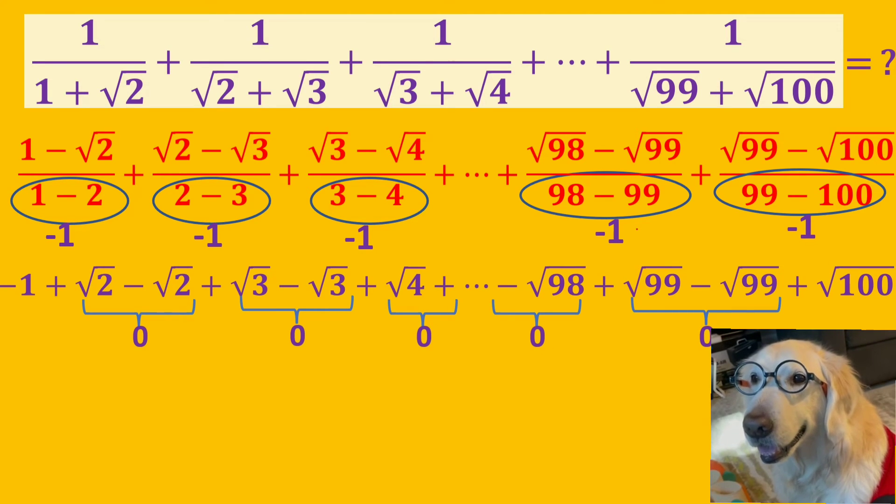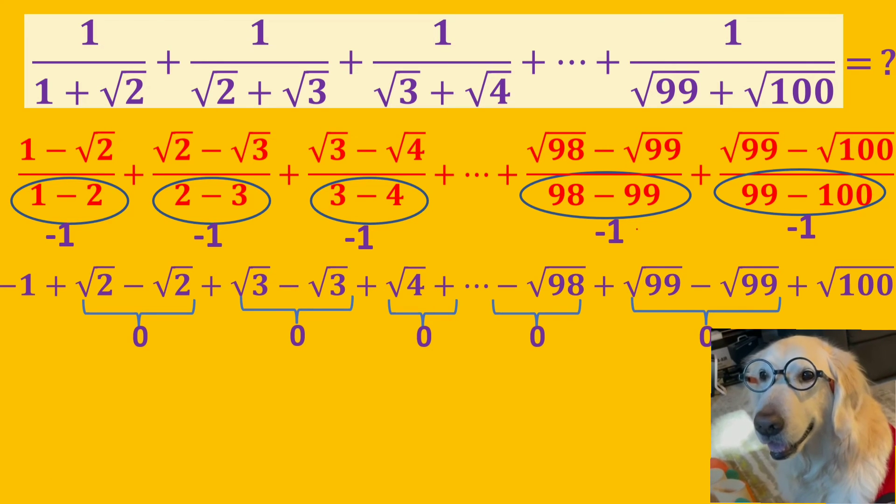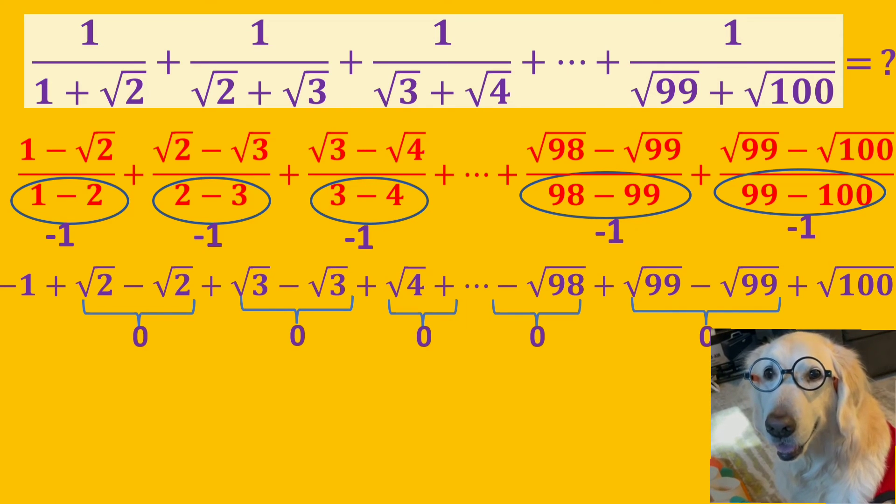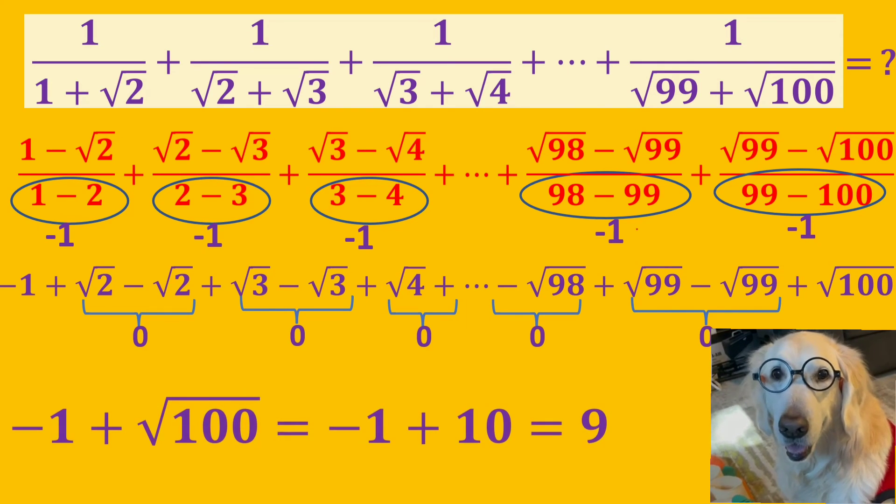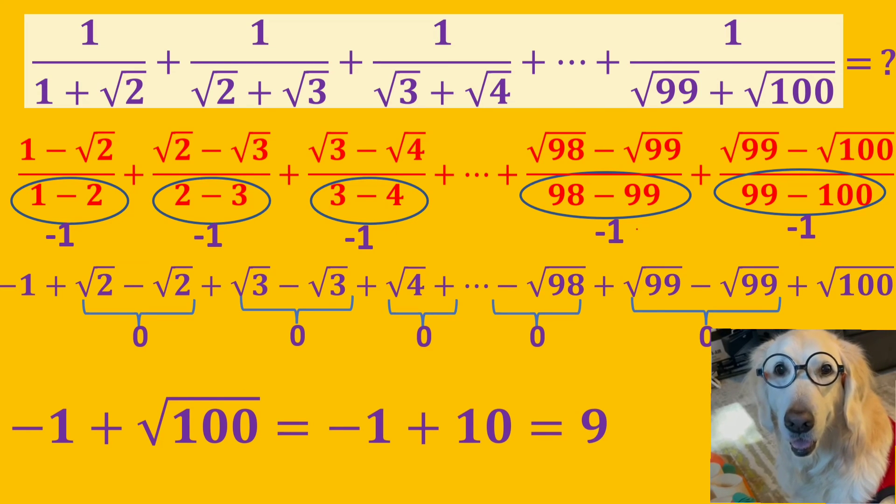As you can see here, the sum of all the numbers from square root of 2 to square root of 99 is 0. And there are just two numbers left.